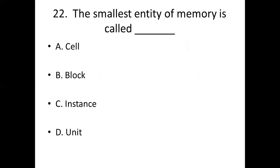Twenty-second bit. The smallest entity of memory is called dash. Option A, cell. Option B, block. Option C, instant. Option D, unit. Answer: Option A, cell.